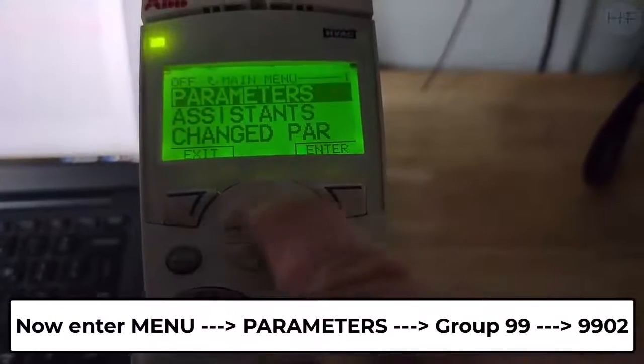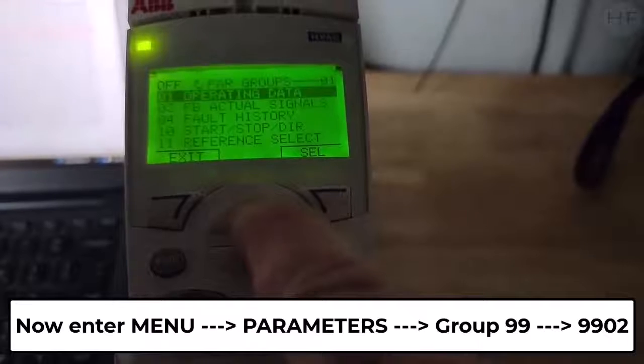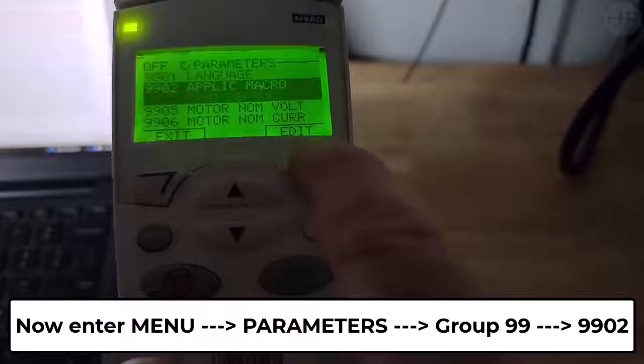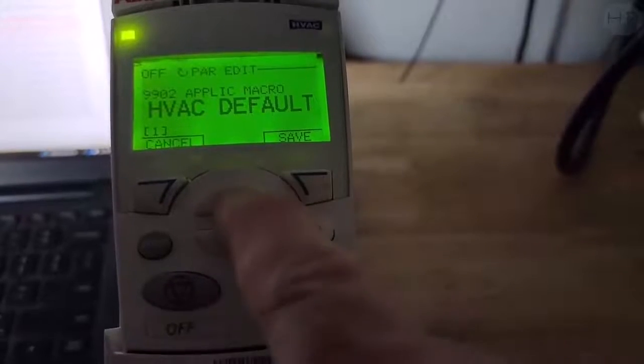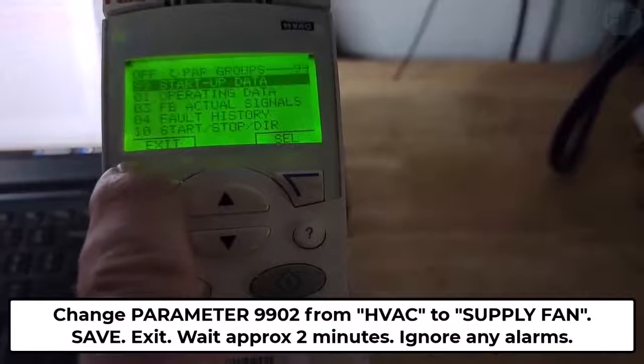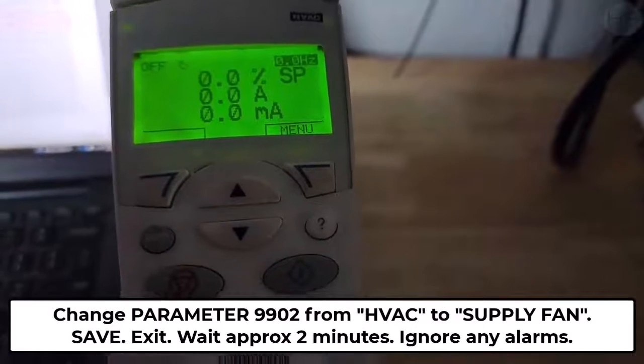Now enter menu, parameters, group 99 and find parameter 9902. Change parameter 9902 from HVAC to Supply Fan. Save, exit and then wait approximately 2 minutes.